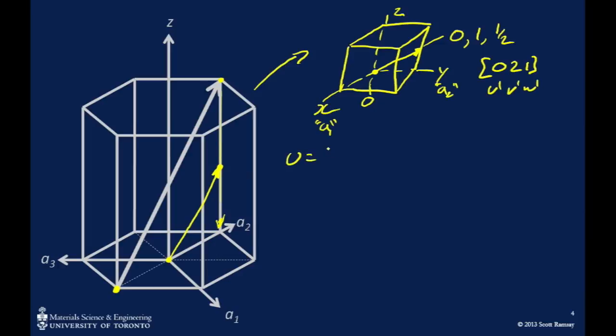Therefore, U is just equal to 1 third times 2 times 0 minus 2, which equals negative 2 thirds. V is 1 third of 2 times 2 minus 0, which equals 4 thirds. T is the sum of U and V all made negative. So 4 thirds minus 2 thirds is equal to 2 thirds, and that's all made negative, so it's negative 2 thirds. And W is just W prime, which is 1.